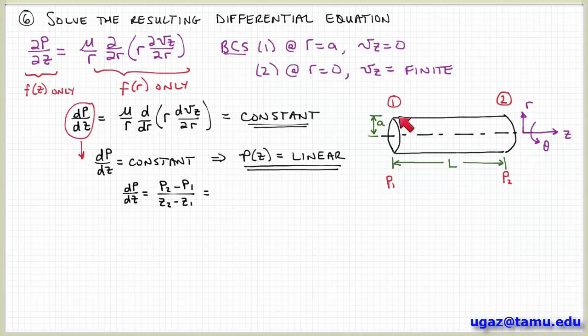We have a cylindrical pipe of radius A and length L. And I'm going to define the inlet to this pipe as station 1 and the outlet to this pipe as station 2. So at station 1, let's say the pressure is p1. And at station 2, the outlet, let's say the pressure is p2.